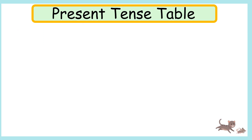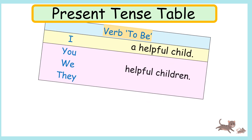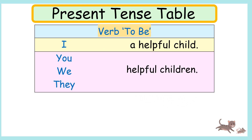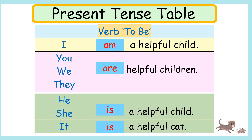I found that there's another type of verbs. They are not actions. We call them verb to be. They are am, are, is. After I, we use am. After you, we, they, we use are. After he, she, it, we use is. For example: I am a helpful child. Sometimes when we talk about facts, we need verb to be to help us.